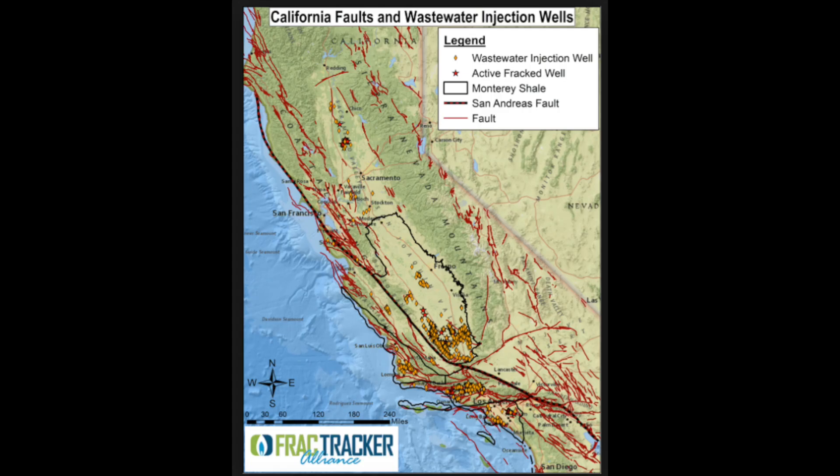This is a map of California. All the red lines are active faults that are in California. Nearly everyone in California lives within 30 miles of an active fault that can cause a damaging earthquake. More than 2,000 faults crisscross California, and scientists continue to discover new ones all the time.